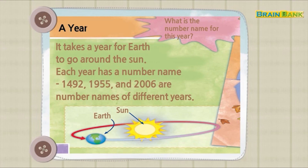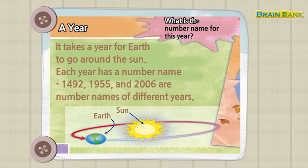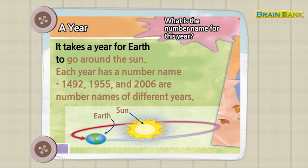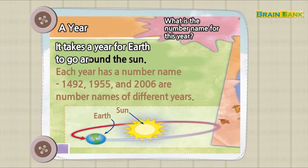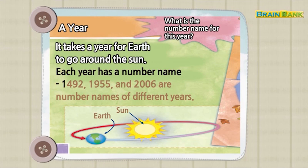A year. What is the number name for this year? It takes a year for Earth to go around the sun. Each year has a number name. 1492, 1955, and 2006 are number names of different years.